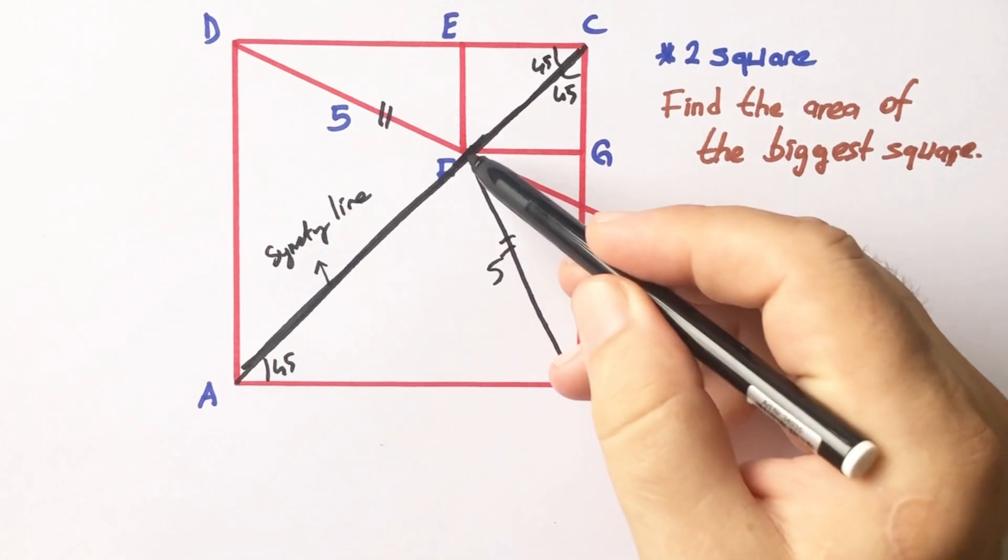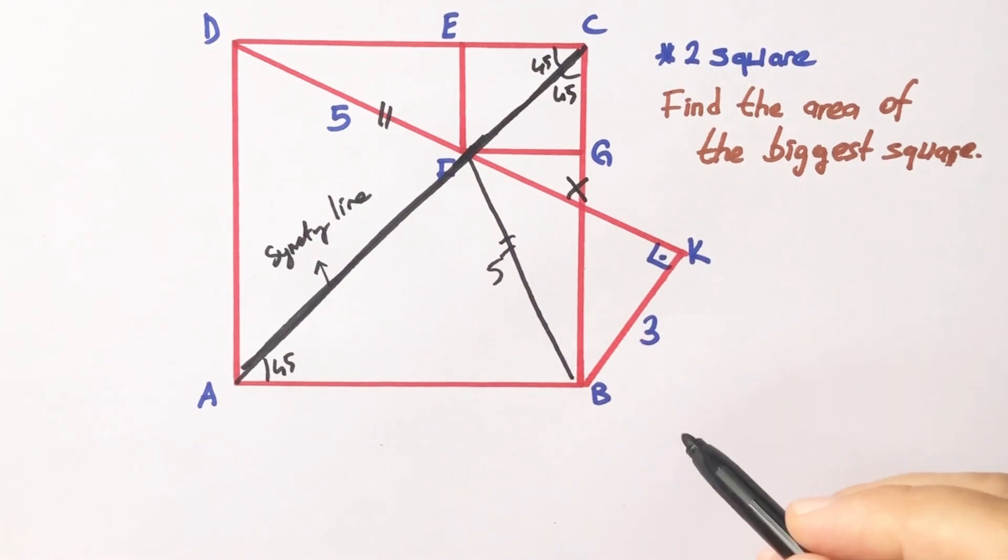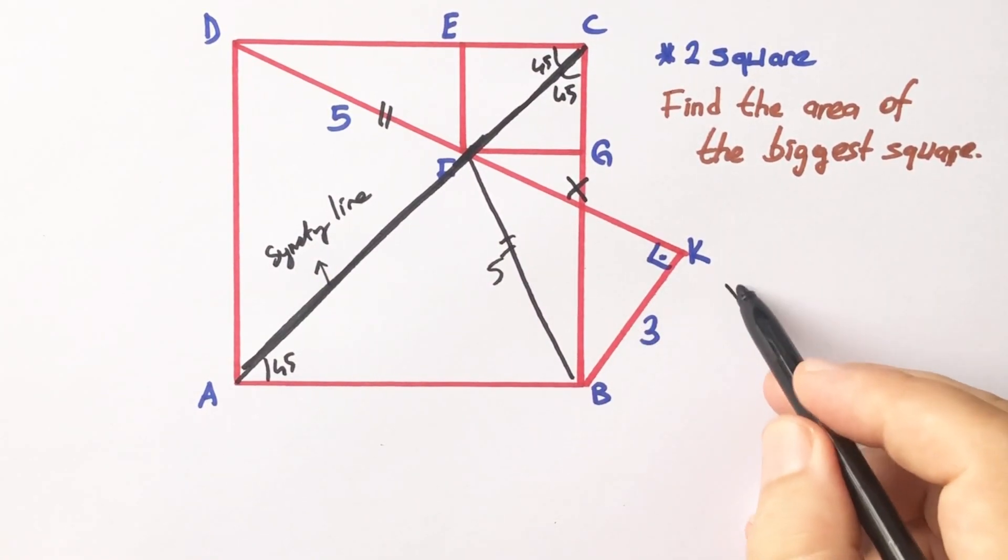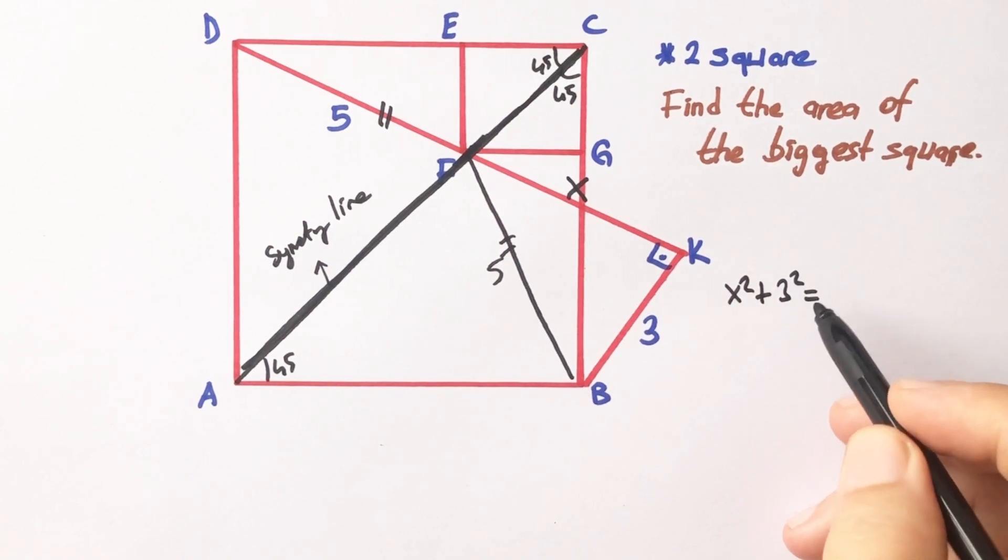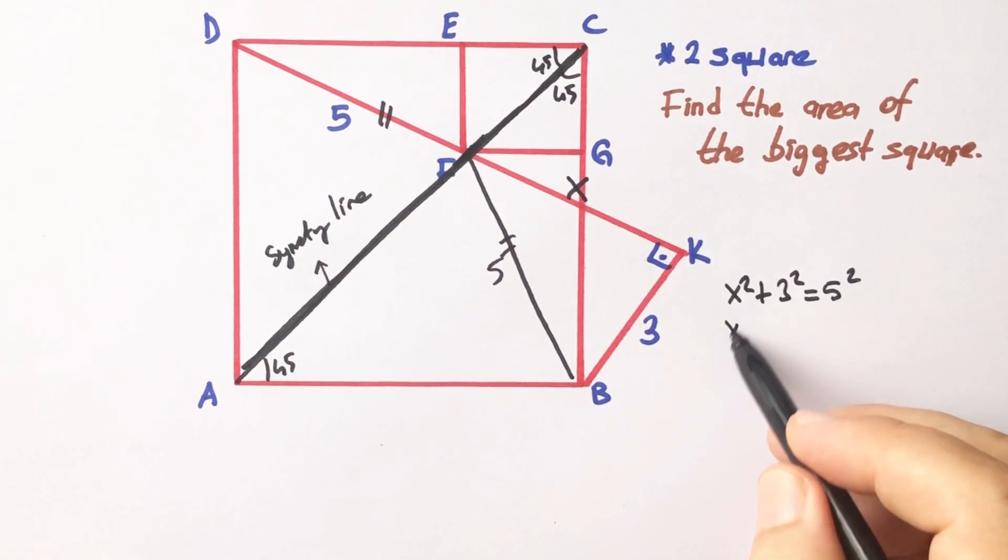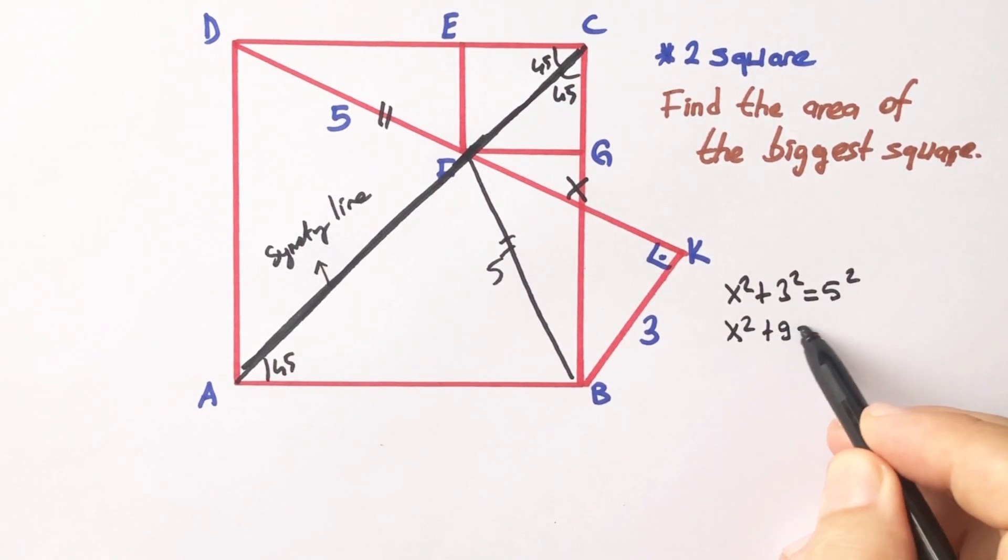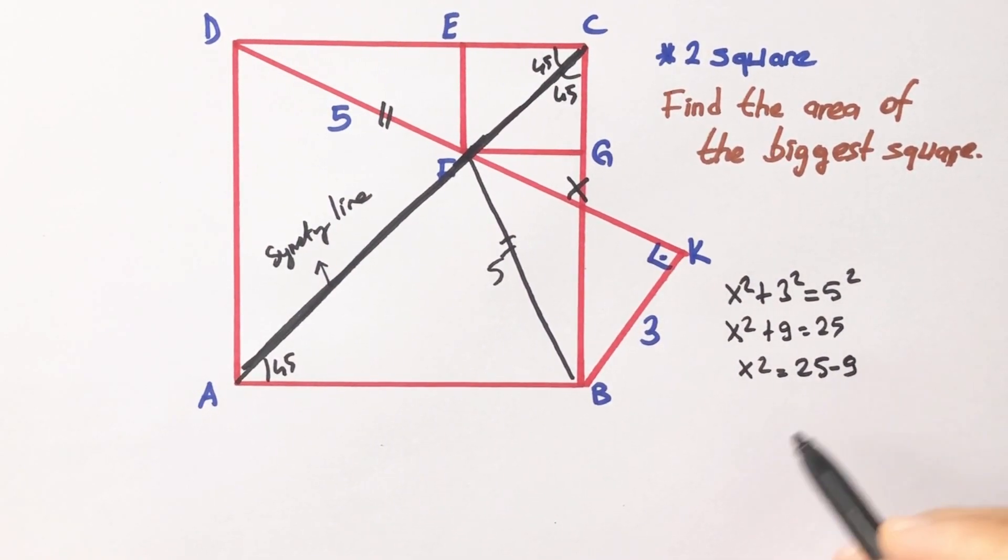For this triangle, let's call here X units. If we apply Pythagorean theorem, X squared plus 3 squared equals 5 squared, right? So X squared plus 9 equals 25. X squared equals 25 minus 9. X squared equals 16. X equals 4 units.